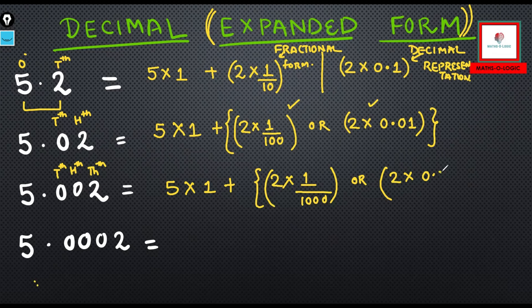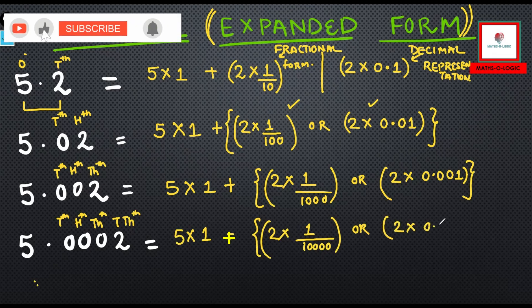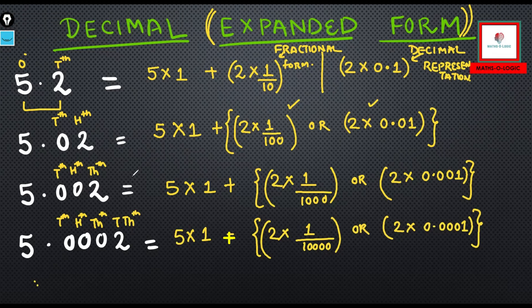Now this becomes 5×1, five ones, and then 2×1/10000. Why? Because this is tenth, this is hundredth, this is thousandth, and this is ten thousandth. I hope this is clear. Now you can choose whatever the question says. This is 10000, and just follow the similar steps.